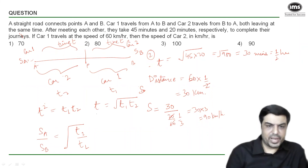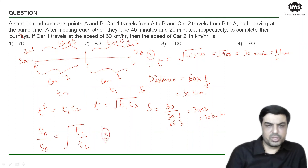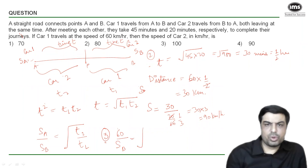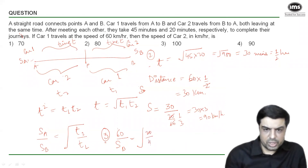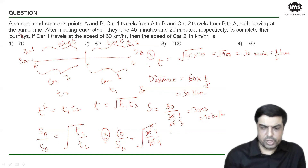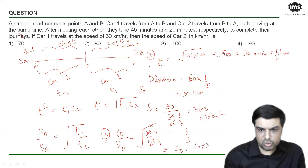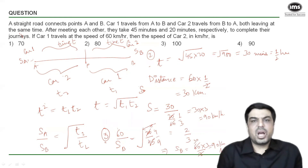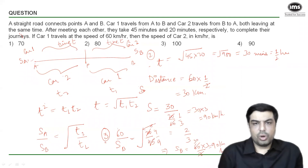Method 3 uses Formula 2 directly for the fastest solution: sa/sb = √(t2/t1). Speed of A = 60, speed of B = sb (unknown). t2 = 20, t1 = 45; ratio t2/t1 = 20/45 = 4/9. Since √(4/9) = 2/3, we get 60/sb = 2/3, so sb = 60 × (3/2) = 90 km/h — the answer in one step.